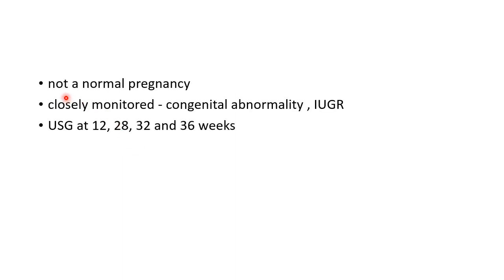Now, what are the special points regarding multiple pregnancy? You should remember that multiple pregnancy is not a normal pregnancy. It needs to be closely monitored for congenital abnormality and intrauterine growth restriction. Ultrasonography should be done at 12 weeks to determine chorionicity and should be repeated at 28, 32, and 36 weeks to identify congenital abnormality and intrauterine growth restriction, which is more common especially in the second twin.